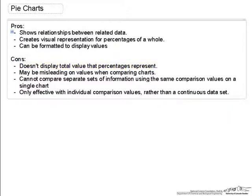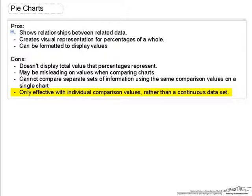Cons of using pie charts: it doesn't display the total value that the percentages represent. In our case, the total the in-state student paid was about $28,000, while the out-of-state student paid $46,000. It can also be misleading when comparing between two charts — in our case, it made it seem like the out-of-state students paid less on the fees than the in-state students, even though those values were exactly the same. Pie charts also cannot compare separate sets of information on a single chart, and are only effective with individual comparison values rather than a continuous data set.